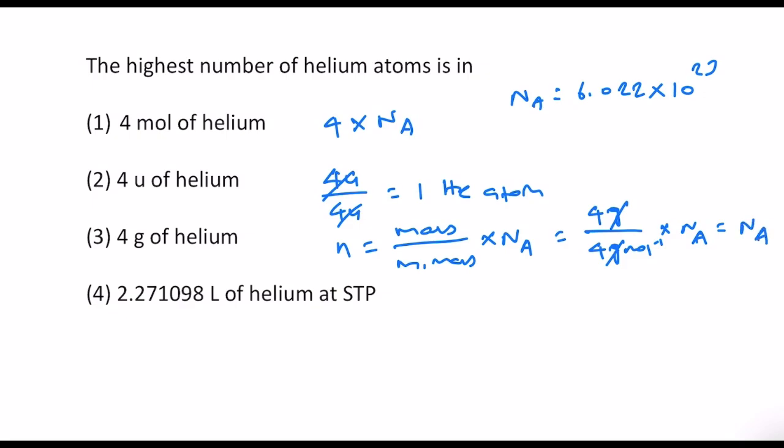And then in option 4, we have 2.271098 liter of helium at STP. 273 K and 1 bar pressure is the standard temperature and pressure condition. The volume occupied by 1 mole of any gaseous substance at STP is 22.71 liter.